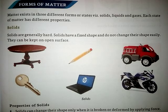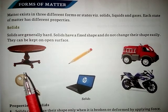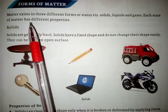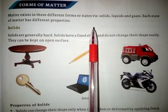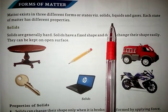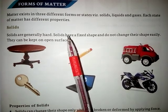Good morning children. Today let's continue chapter 7 of your science — this is page number 75 of your book. Please open your book. Today we will know about forms of matter. Matter exists in three different forms or states: solids, liquids, and gases. Each state of matter has different properties.